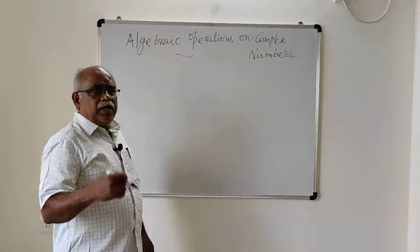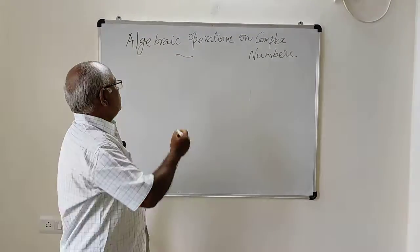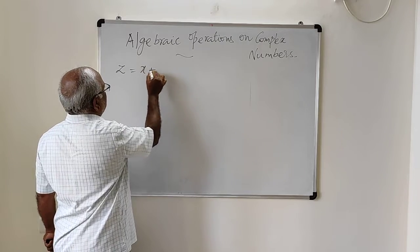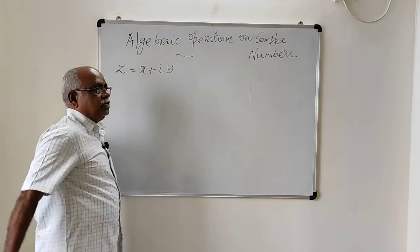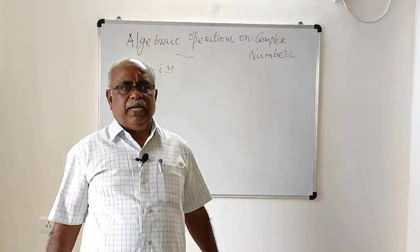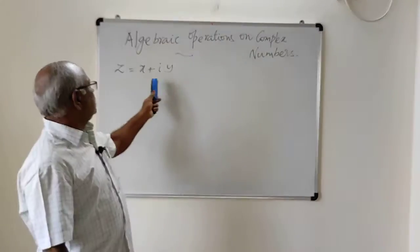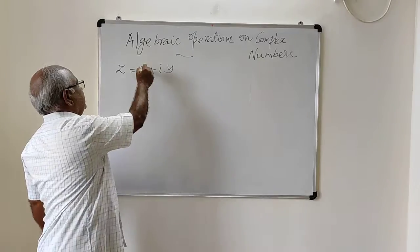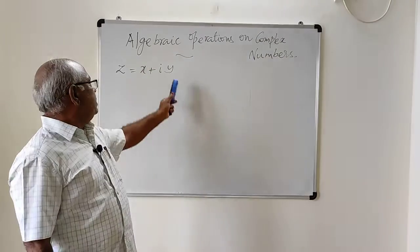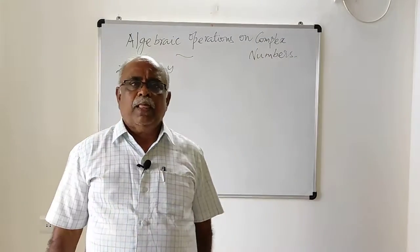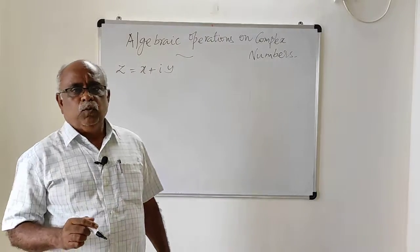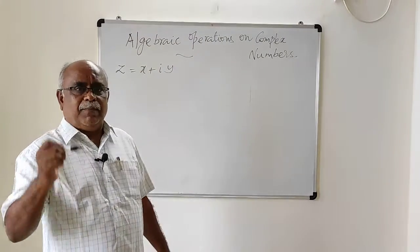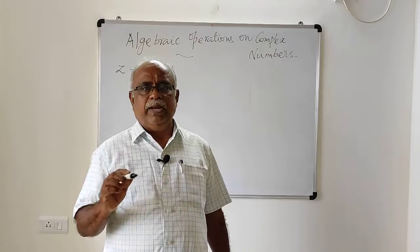As I introduced in the previous videos, a complex number z is represented by x plus iy. The complex number is represented by the letter z, which is equal to x plus iy. x is the real part of z, and y is the imaginary part of z. And i is the square root of minus 1.